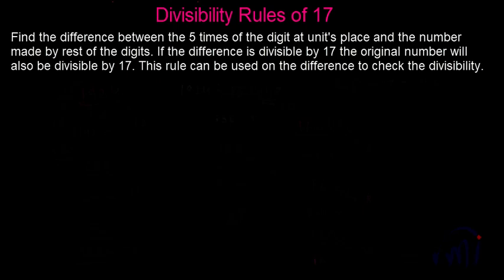Hi, so in this video we are going to learn the divisibility rule of 17. The rule says: find the difference between five times the digit at the units place and the number made by the rest of the digits. If the difference is divisible by 17, the original number will also be divisible by 17. If the rule can be used on the number, it can also be used on the difference to check divisibility. Let's take a few examples and try to learn this rule.